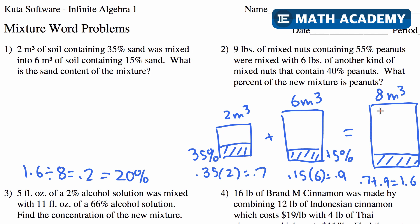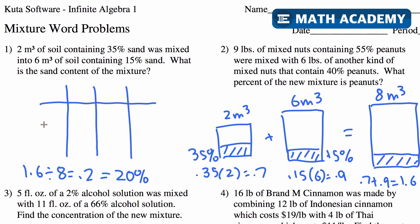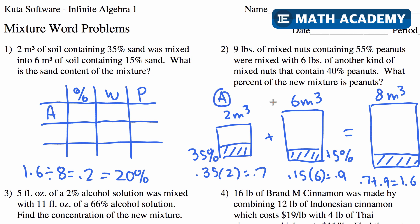That's how you can draw this out and make sense of it. Now let's look at how we can use a table to solve this, because sometimes mixture problems ask for different parts to be solved. By using a table you can solve for any part of it. I'm going to draw what I call a super tic-tac-toe board — three down and three across. I'll label the columns: percent, W for whole amount, and P for part. The rows will be A, B, and M for the mixture.